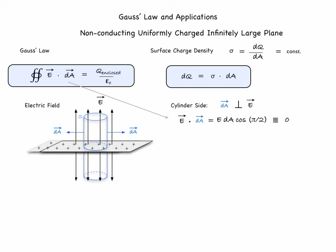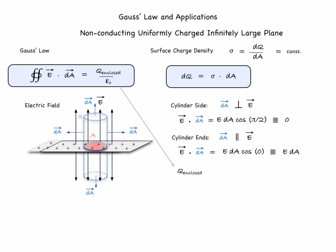Along the sides of the cylinder, the area vector is perpendicular to the electric field lines, so E dot dA equals zero for every surface element on the side. For the cylinder's ends — the top and the base — the area vector is parallel to the electric field vector, so E dot dA simply equals E dA. To apply the law we also need the enclosed charge: if the cylinder's end has area A, the enclosed charge equals sigma times A.